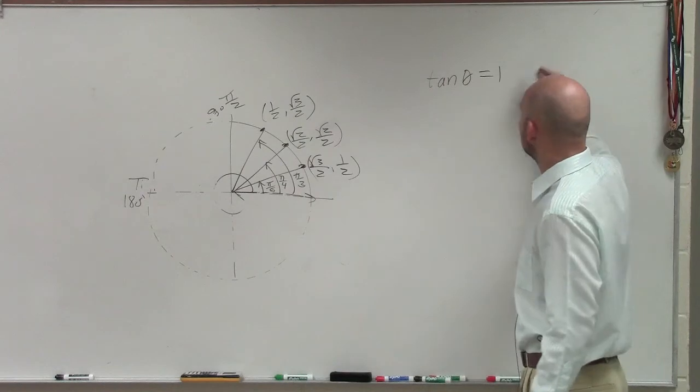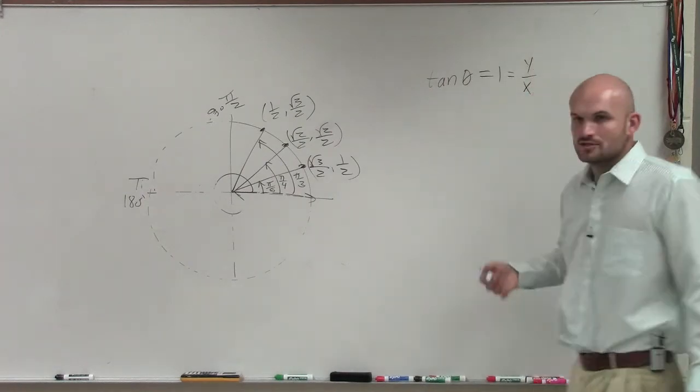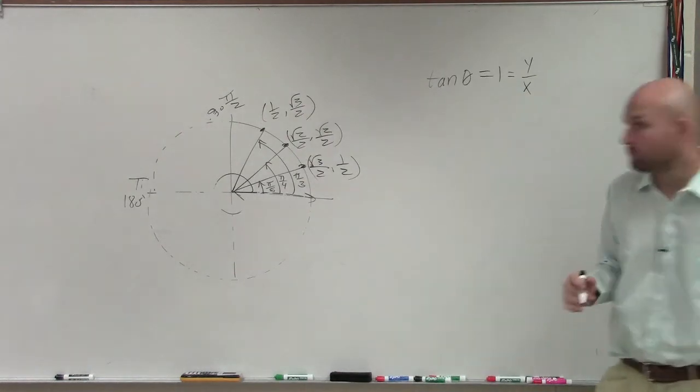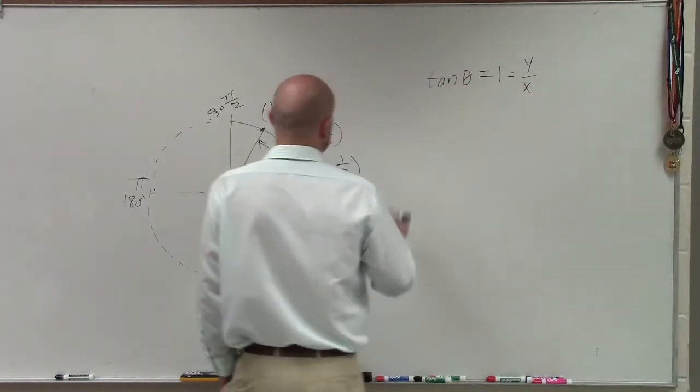So if we want to find b, remember, tangent is y over x. So what I can do is simply take all of these coordinate points and do y over x and see which one is going to give me 1.